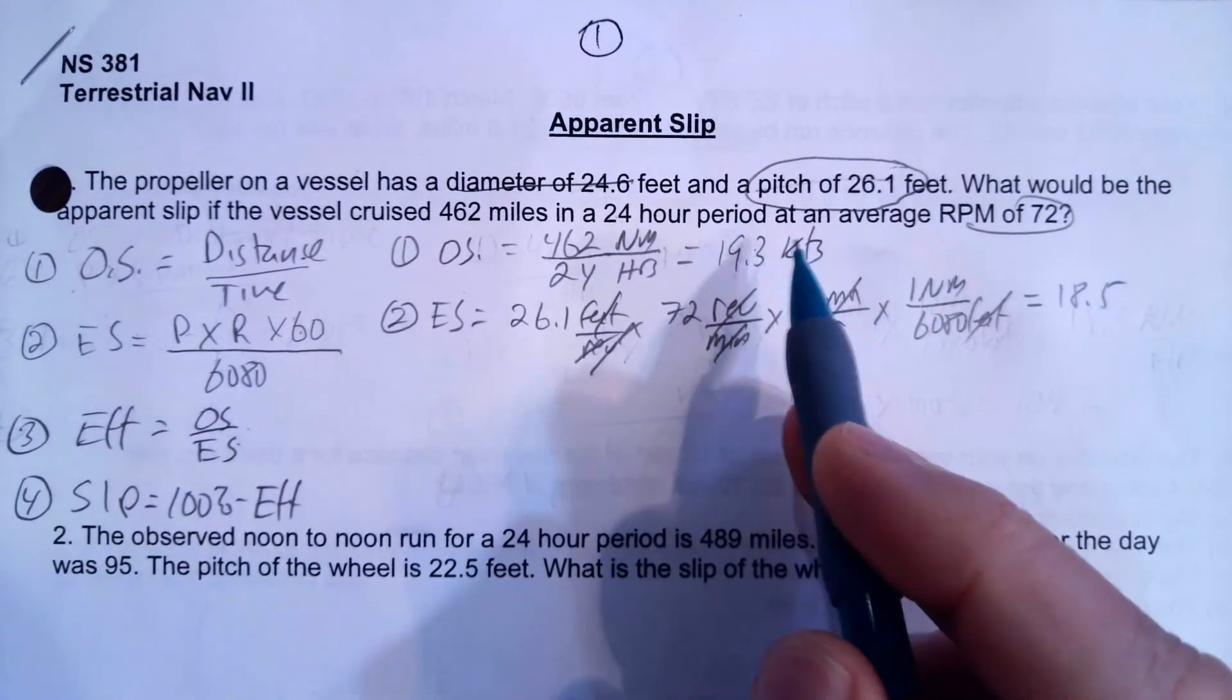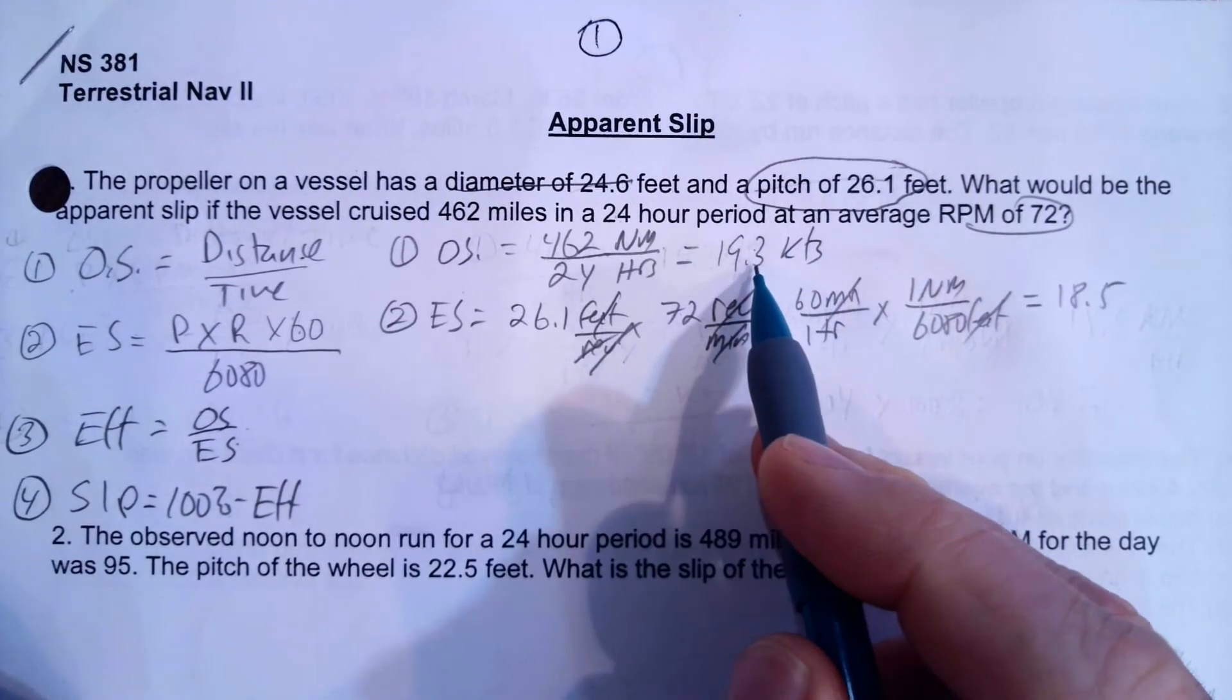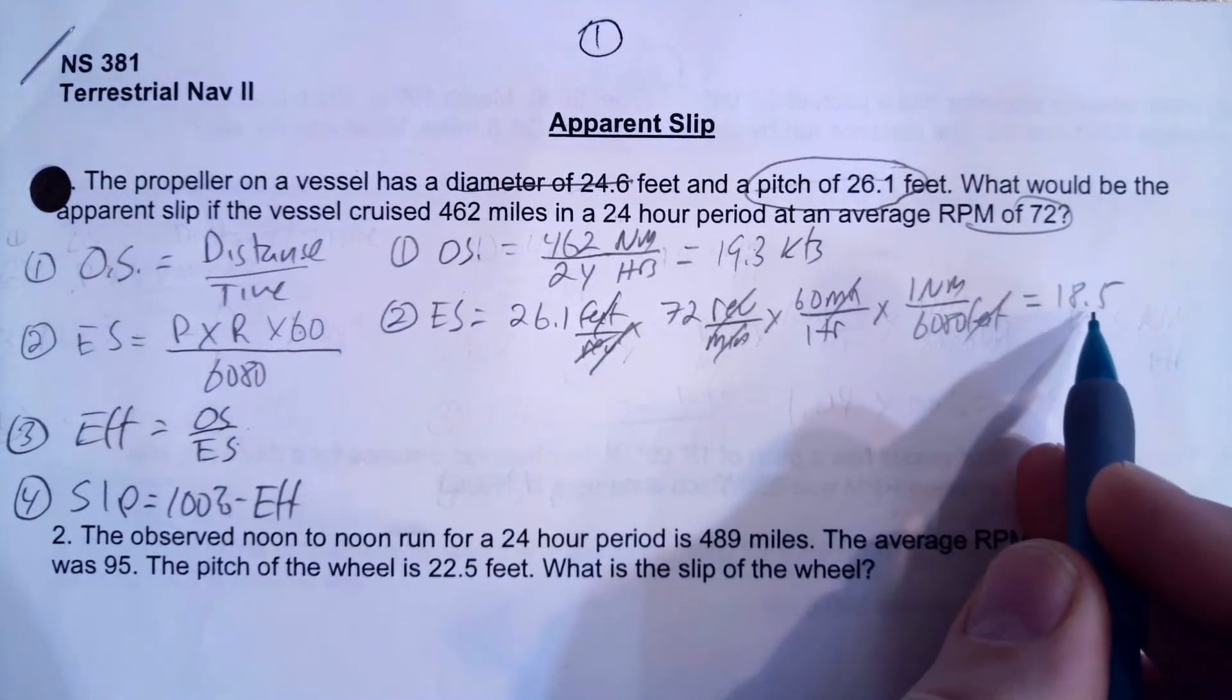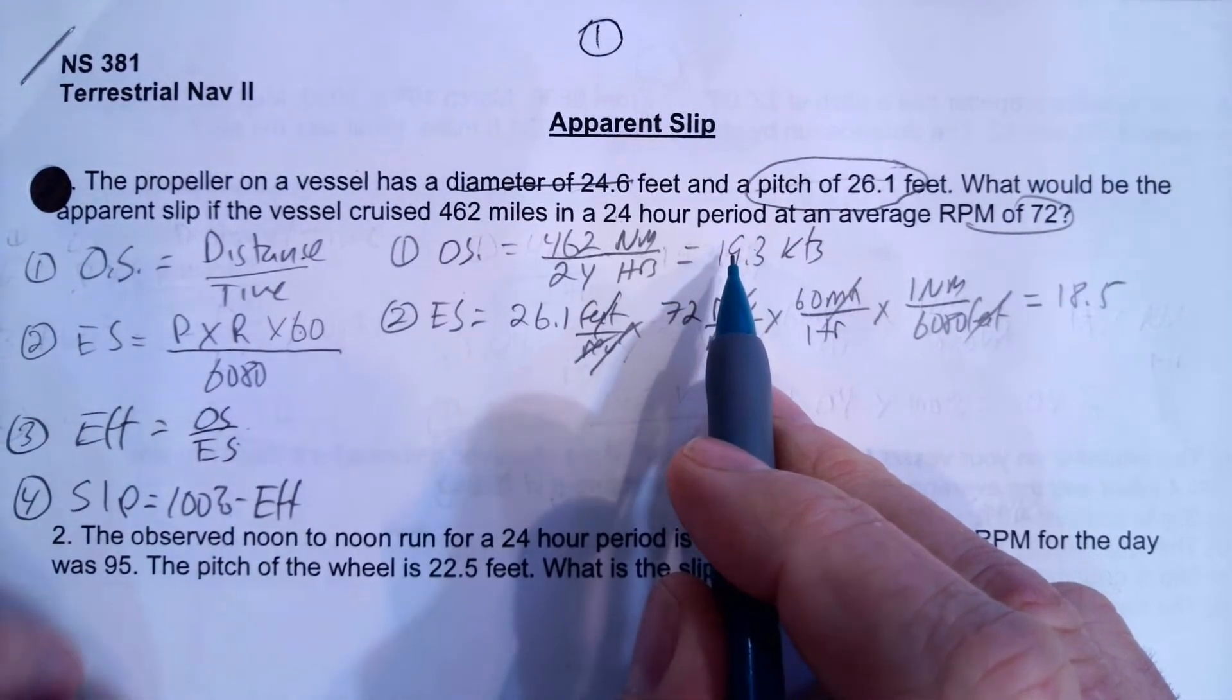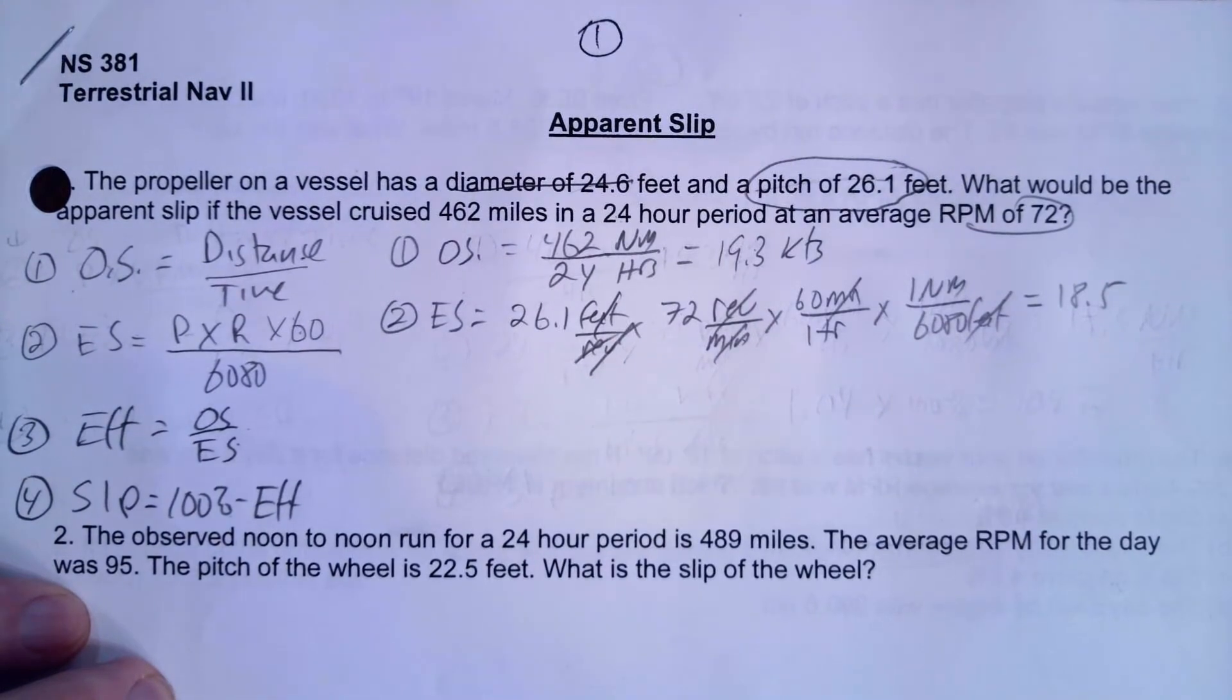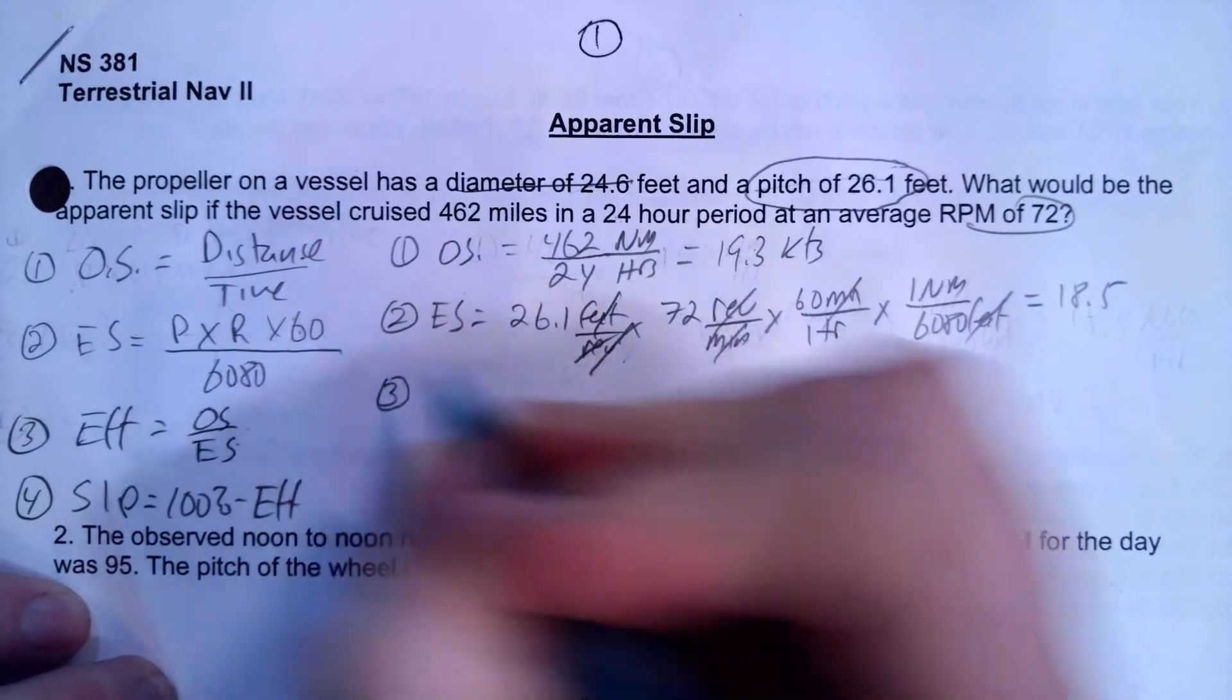So our actual performance was 19.3 knots. Theoretically we should have gone 18.5 knots. So we must've had a little bit of current or wind behind us boosting us. Great. So our efficiency is more than a hundred percent. We're pretty excited about this.